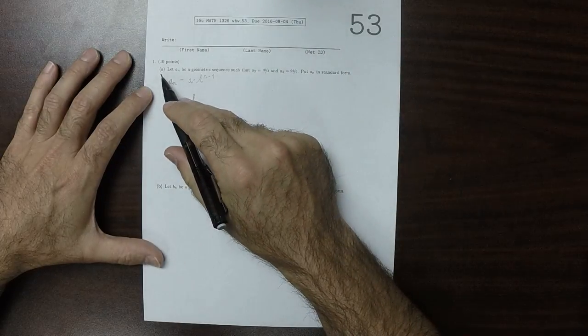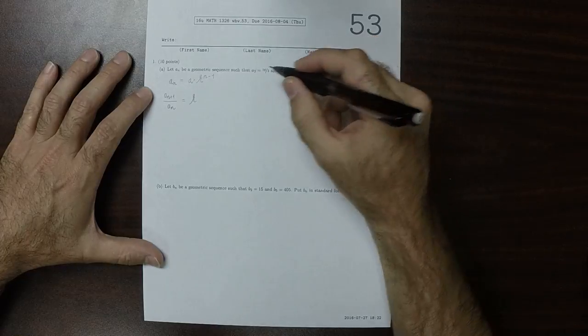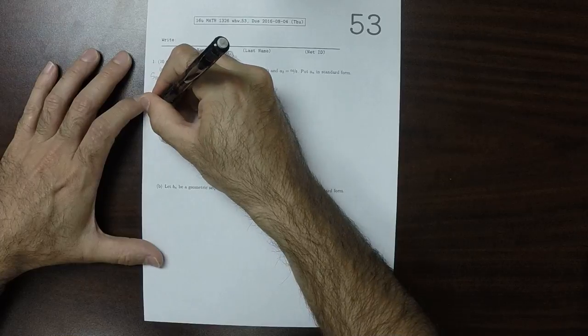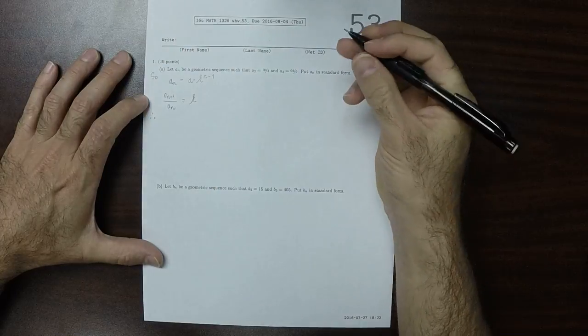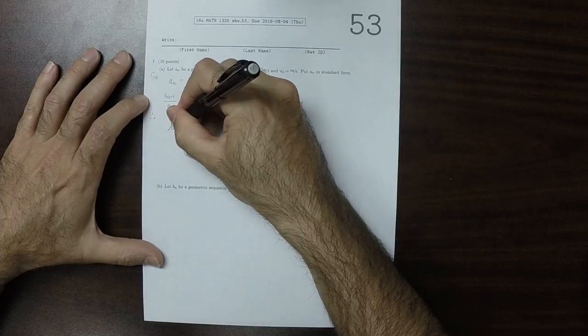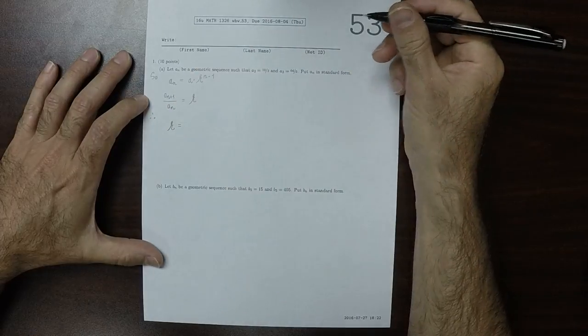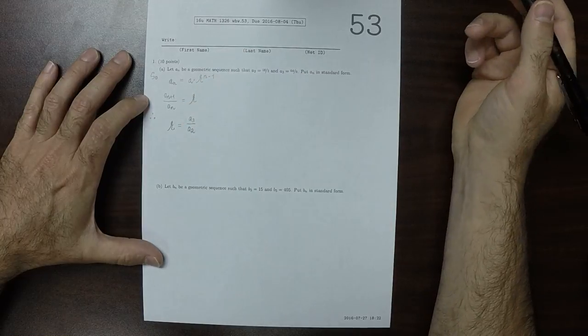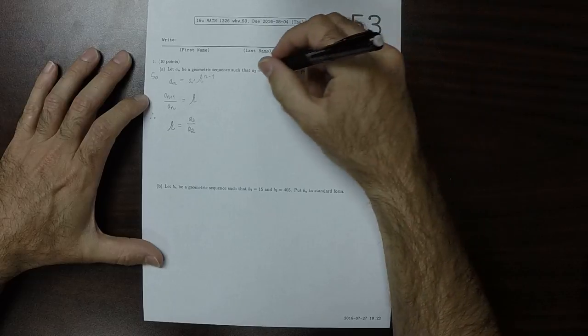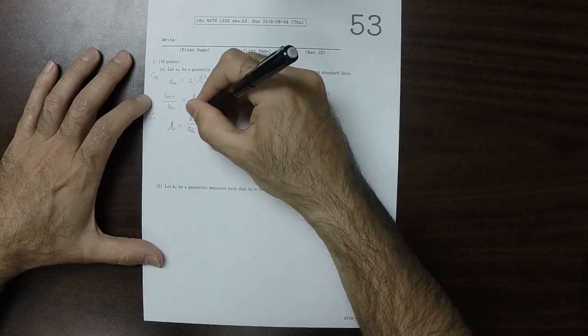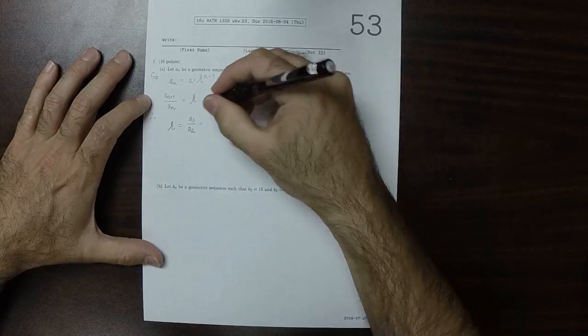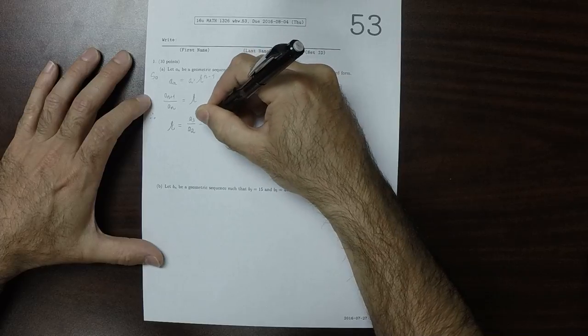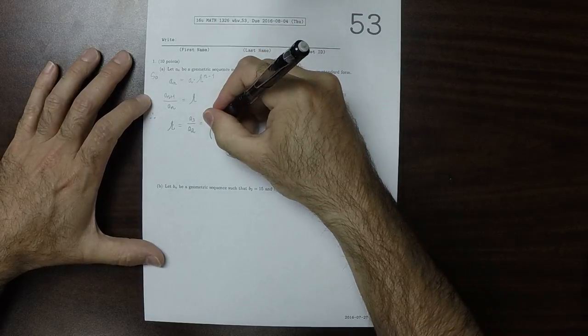So on part a, the first exercise, we're given two consecutive terms. Therefore, we know that the ratio is going to be a3 divided by a2. We were given a3 and a2, so that will be 64 over 9 divided by 16 over 3.